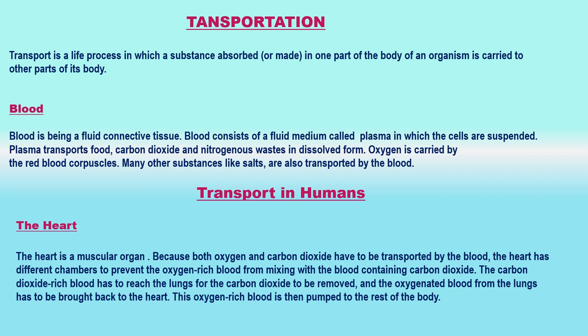Blood is a red-colored liquid which circulates in our body. Blood is red because it contains a red pigment called hemoglobin in its red cells. Blood is a connective tissue. Blood consists of four things: plasma, red blood corpuscles, white blood corpuscles, and platelets.